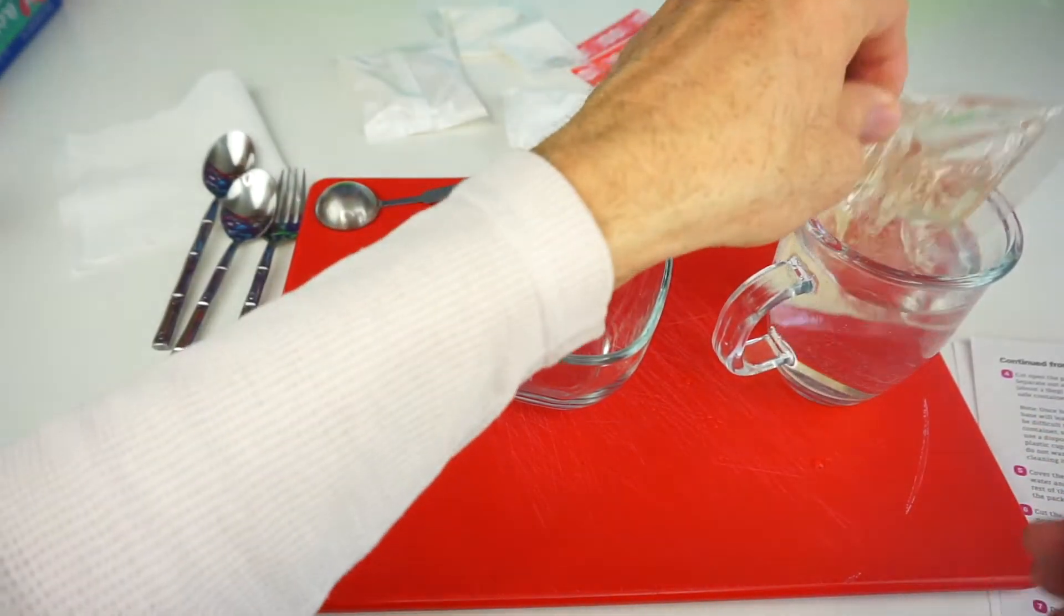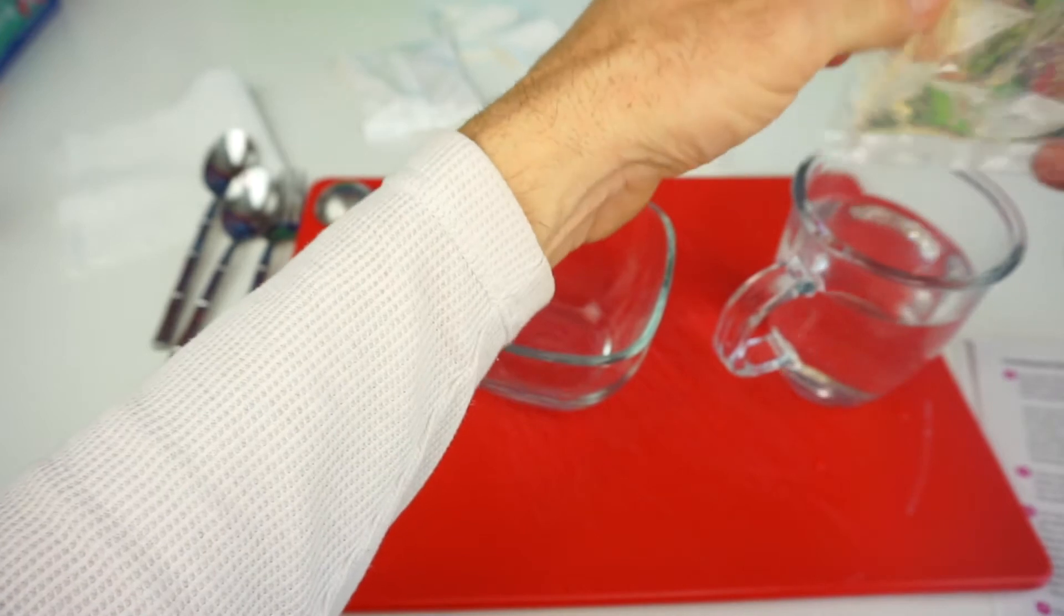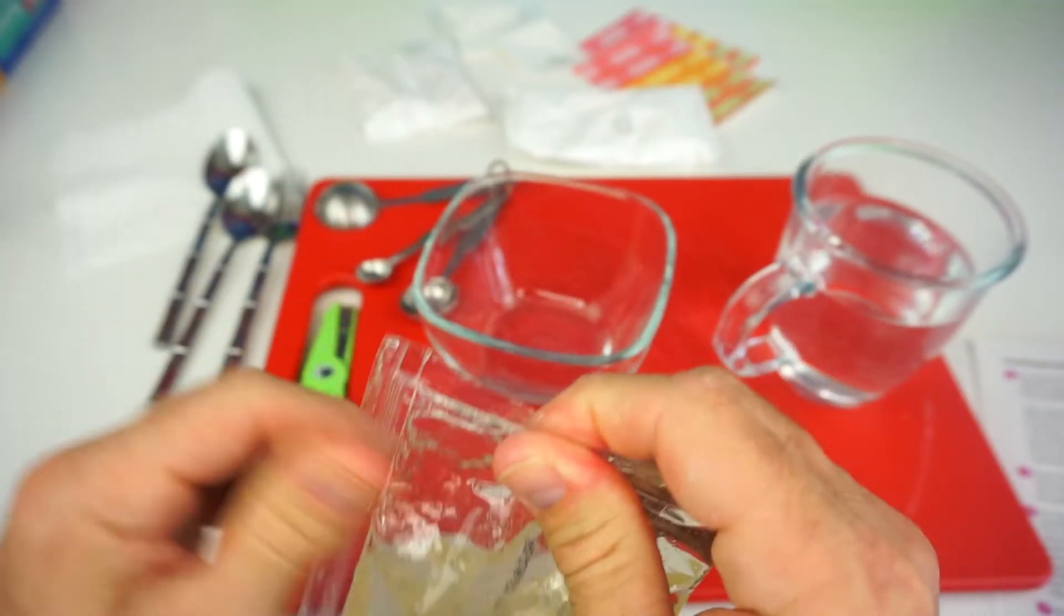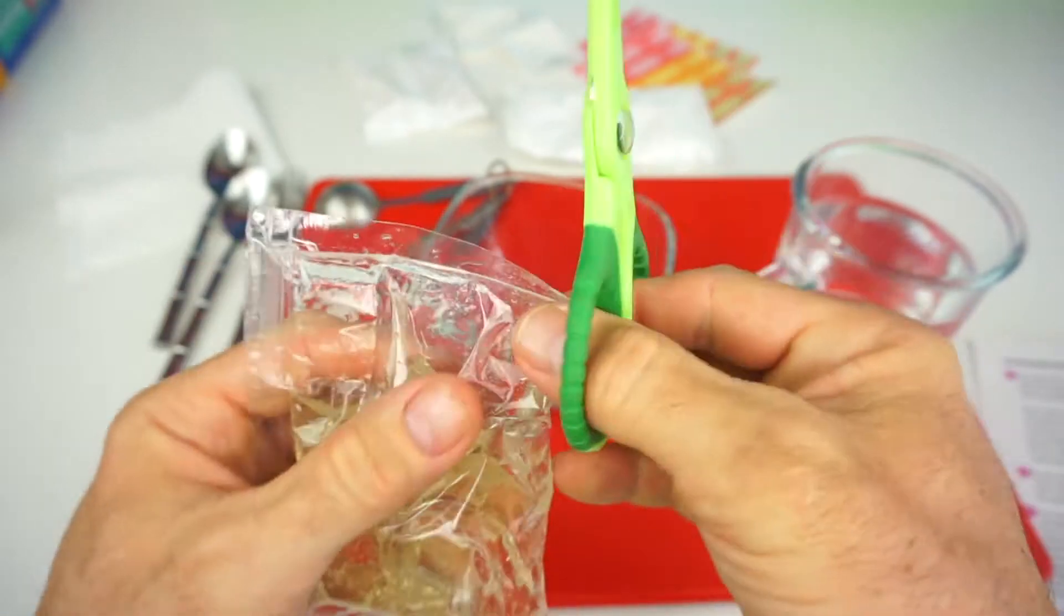Okay, once your corn syrup is softened, take it out of the warm water. It is definitely soft and warm. You're going to cut it open and pour it into this bowl.